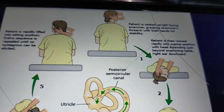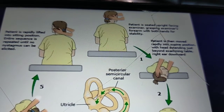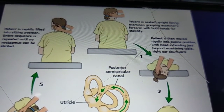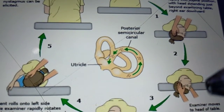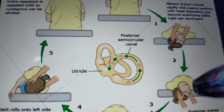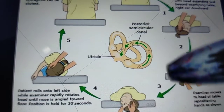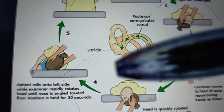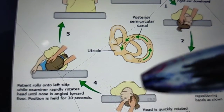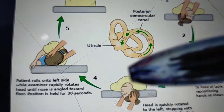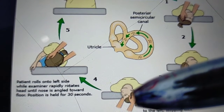After the patient stays in this position for 30 to 60 seconds, slowly turn the patient's head 90 degrees toward the unaffected side. Hold the head in this position for about 30 to 60 seconds. Then from that position, turn the head a further 90 degrees toward the unaffected side, in such a way that the ear becomes parallel to the ground. Keep the patient in this position for about 30 to 60 seconds.